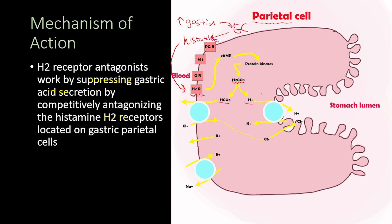The hydrogen ion is secreted by the proton pump into the stomach lumen, where it binds to chloride — also secreted from the parietal cell — to form hydrochloric acid. The H2 receptor antagonists block the H2 receptor at this step, suppressing gastric acid secretion.